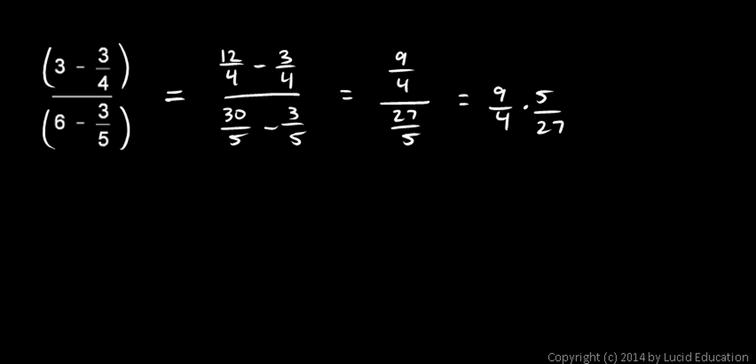And we can simplify this a little bit. The 9 and the 27 are both divisible by 3, so 9 divided by 3 becomes a 3. Actually, they're both divisible by 9. So 9 divided by 9 is 1, and 27 divided by 9 is 3.